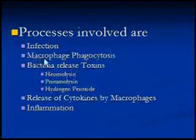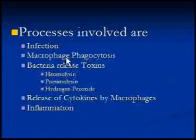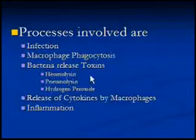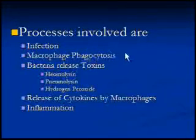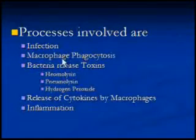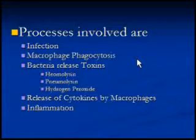Alveoli always have macrophages, which start phagocytosis — meaning they start killing the bacteria. If they completely finish the bacterial population that has managed to enter the alveoli, then nothing goes wrong and the process finishes.